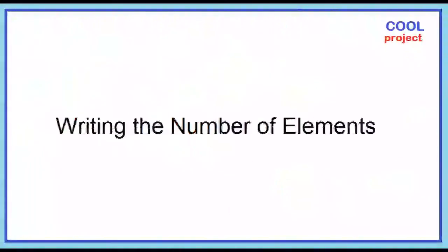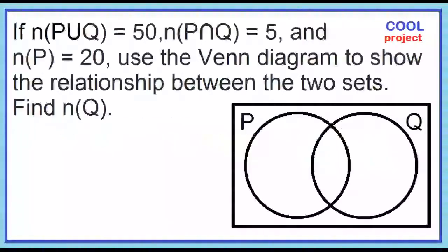Write the number of elements. If the cardinality of P union Q is 50, the cardinality of P intersection Q is 5, and the cardinality of P is 20, use the Venn diagram to show the relationship between the two sets. Find the cardinality of Q.